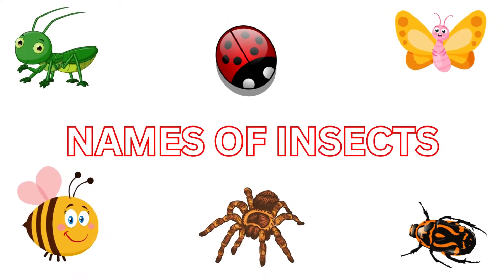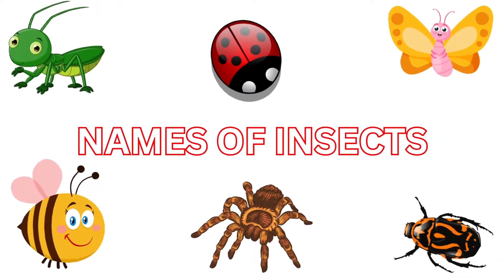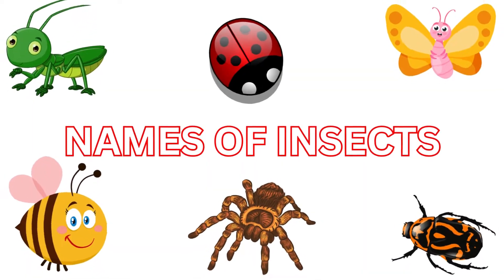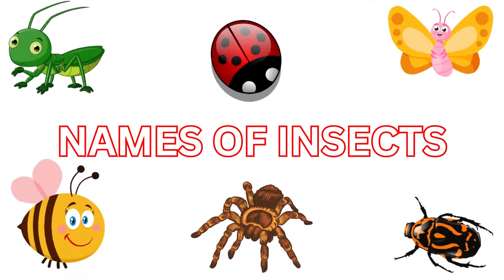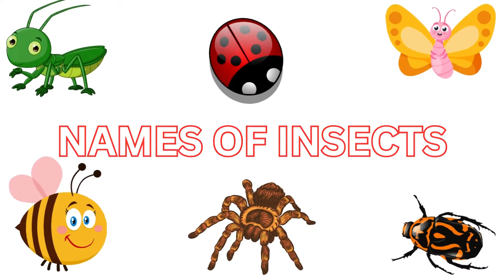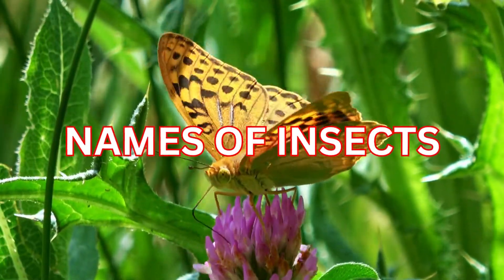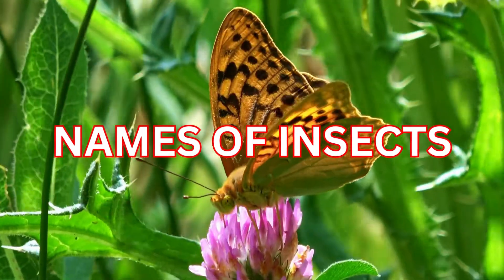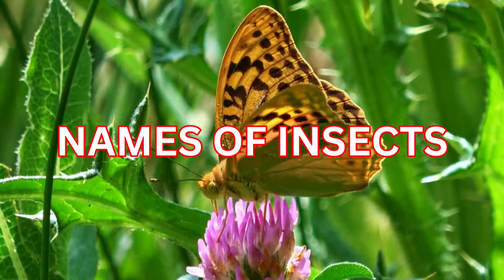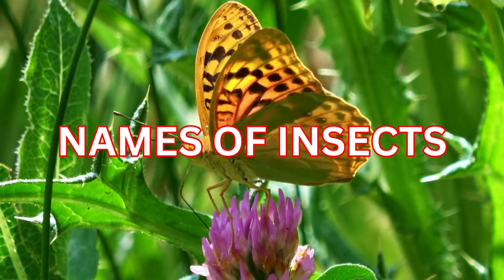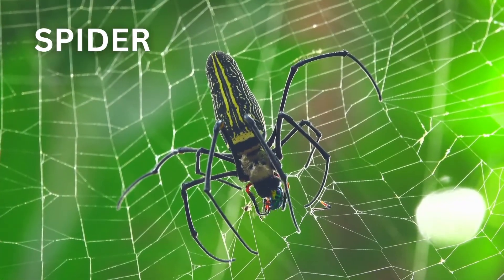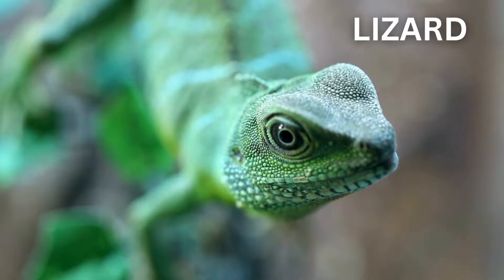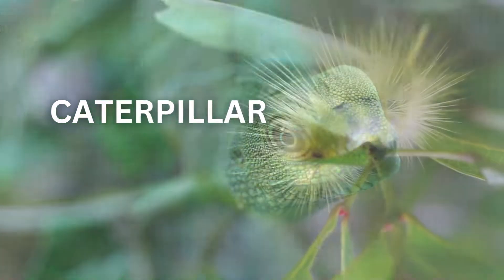Hello kids! Now we are going to learn the names of insects. Insects are tiny creatures with six legs. They come in many colors and shapes — some can crawl, some can fly — but all insects play an important role in nature. So we must learn the names of insects. There will be a quiz in the last part of this video, so don't skip it — watch till the end! Are you ready? Let's go! Ant, spider, lizard, caterpillar.